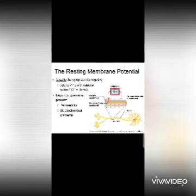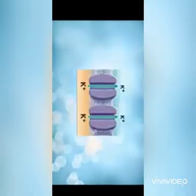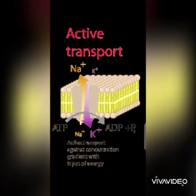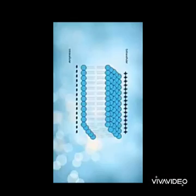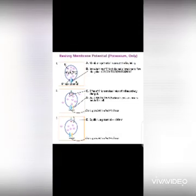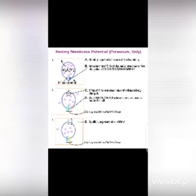Resting membrane potential is therefore the negativity of the interior of the cell membrane as a result of potassium leakage and the activity of the sodium-potassium pump, which leaves the interior of the cell membrane negative compared to the outside. The negatively charged proteins inside are too large to leak out and follow potassium, so the interior remains negative. This continues until an action potential reverses the order.